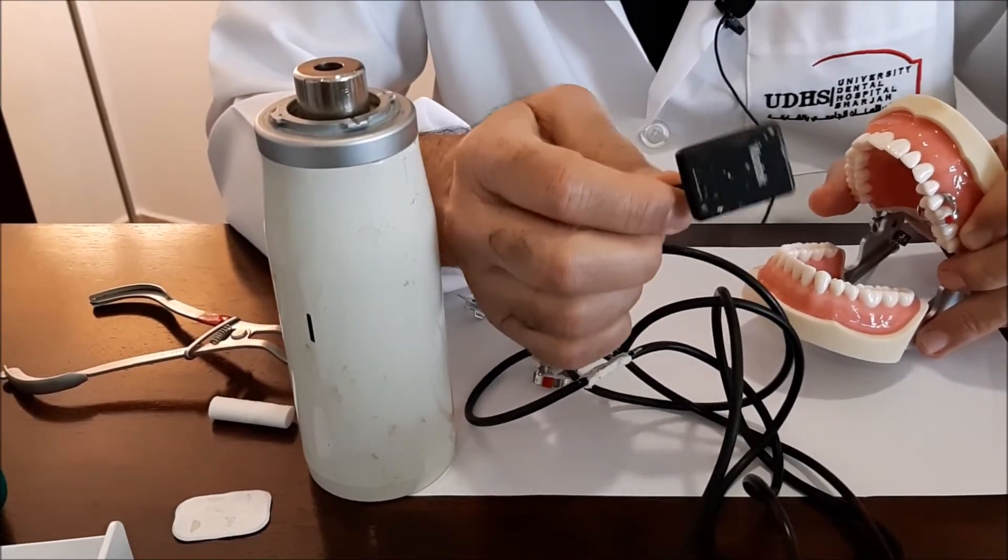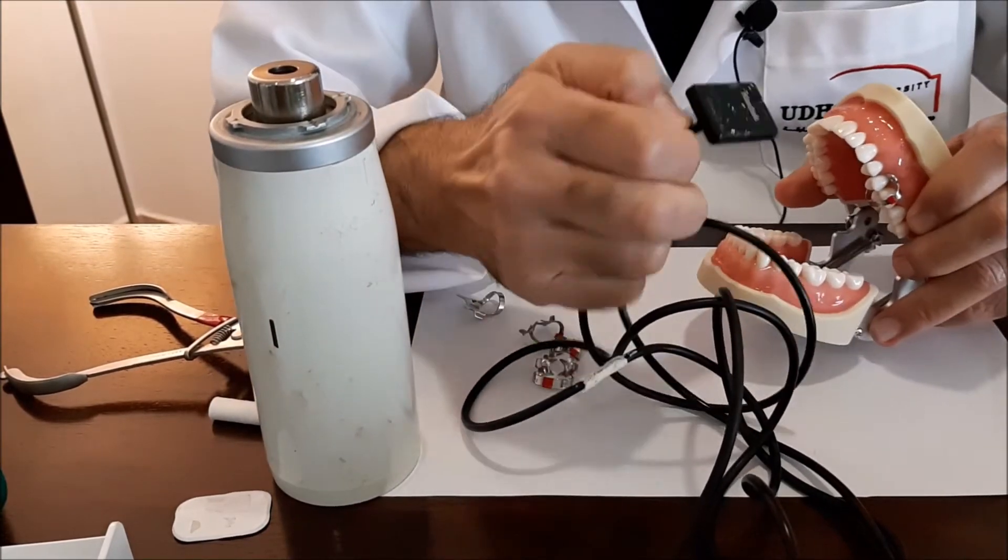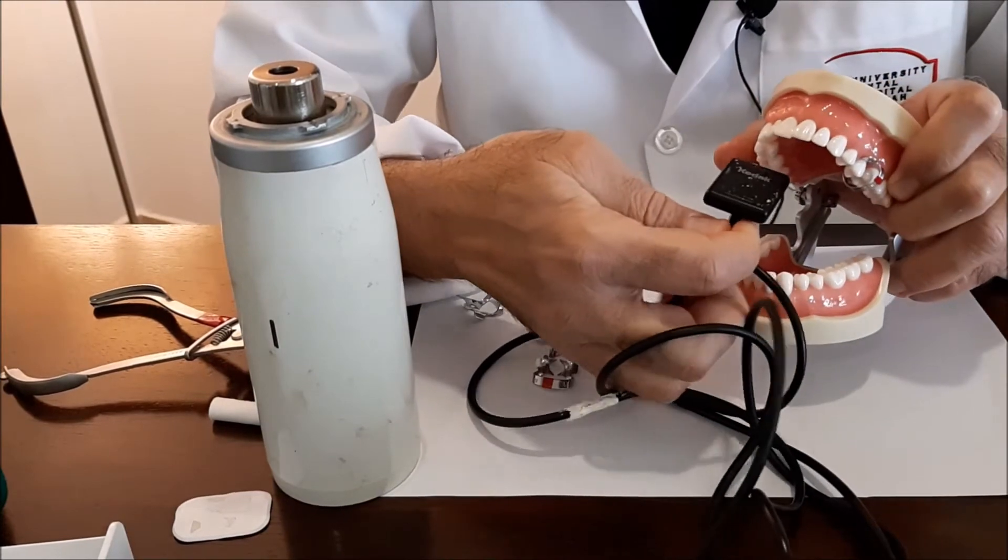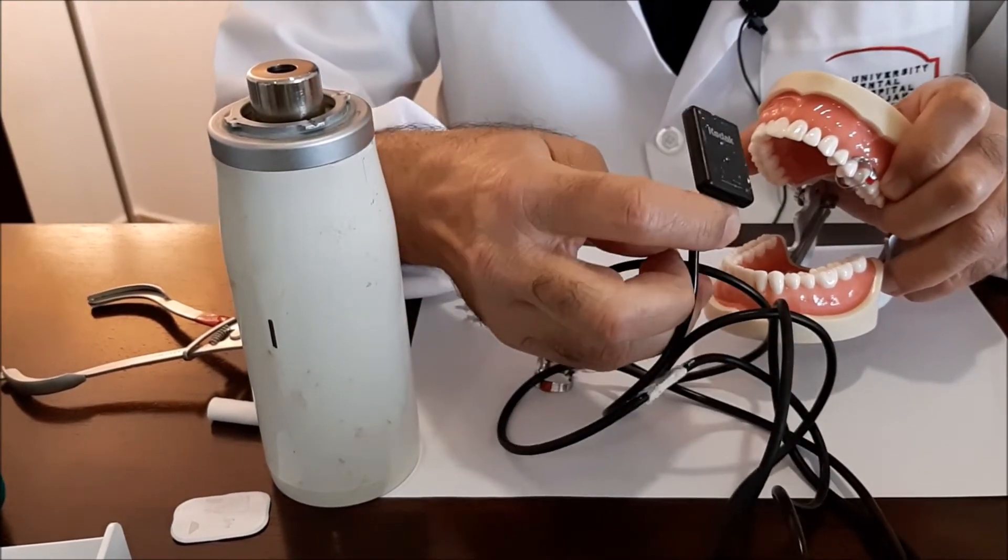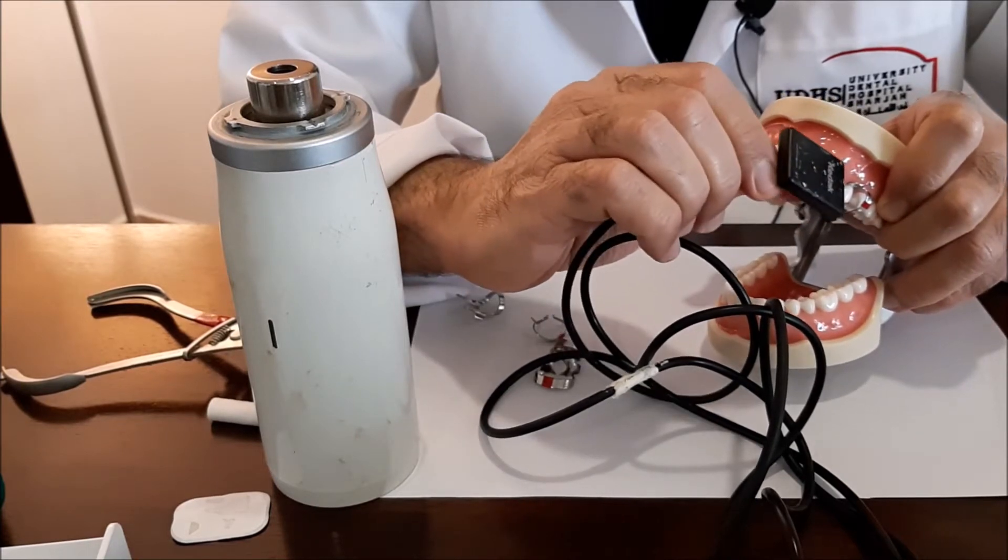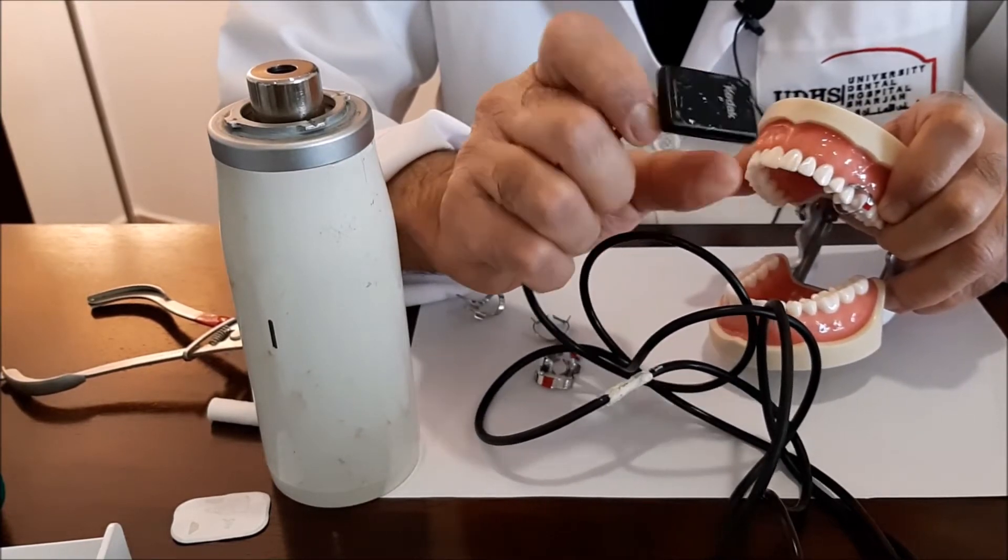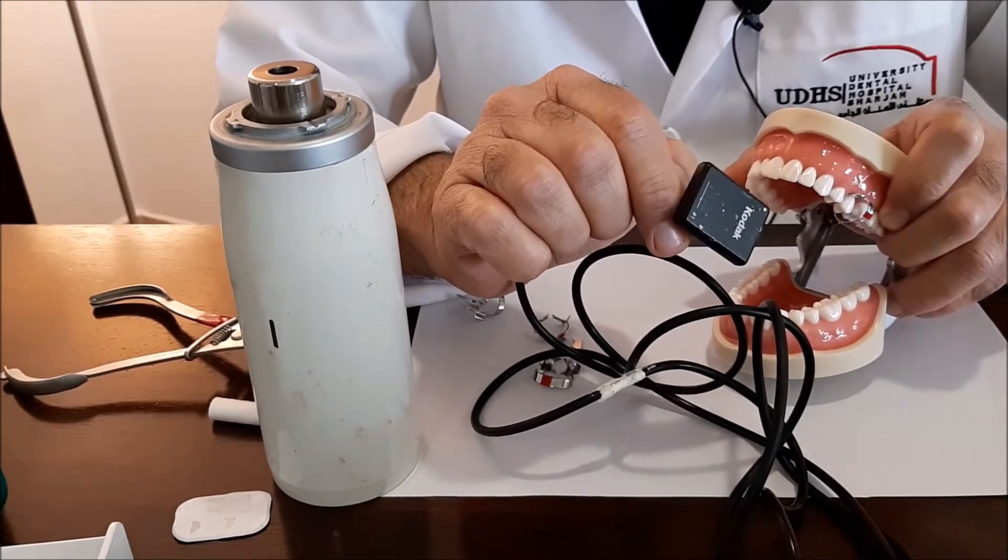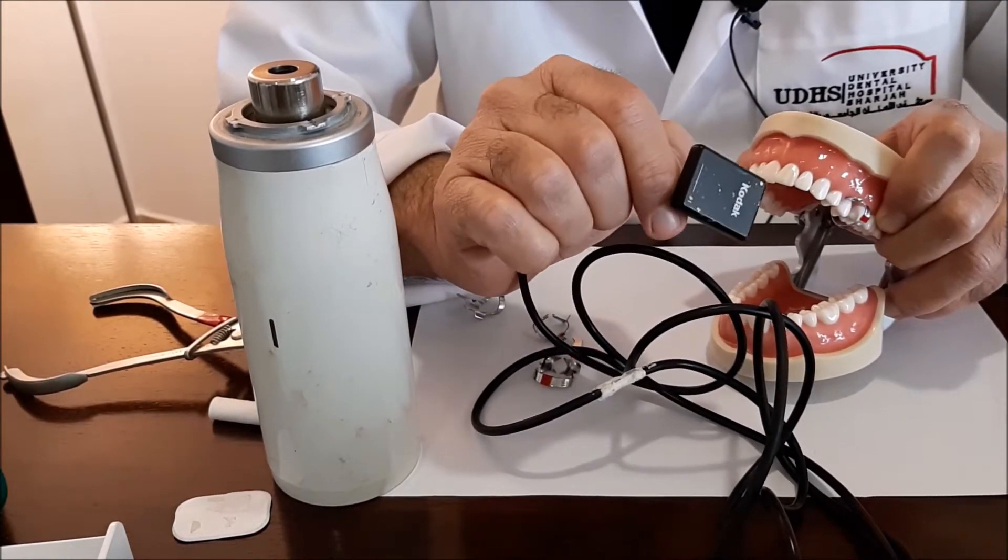First of all, any tooth that is located posterior to the canine, instead of placing the sensor vertically you will place it in a horizontal direction. This is because the roots of the posterior teeth are shorter and this is more convenient for the patient.